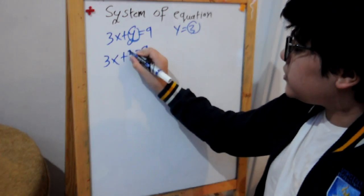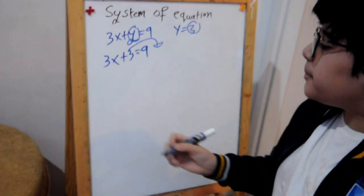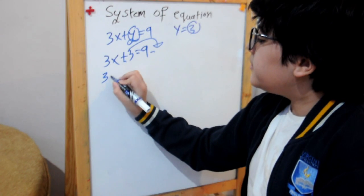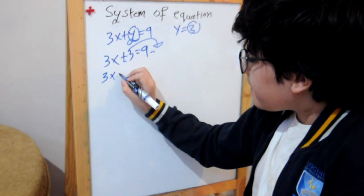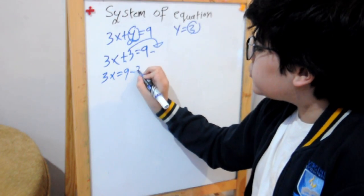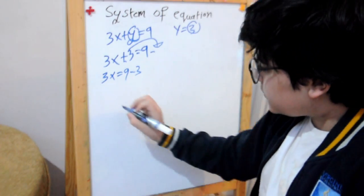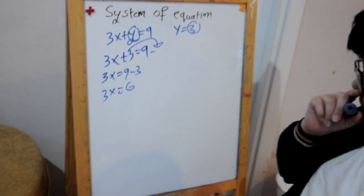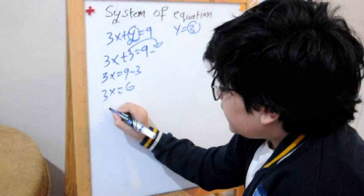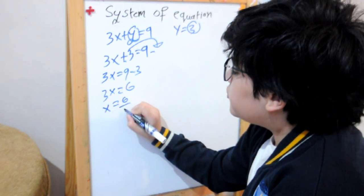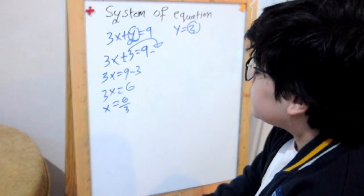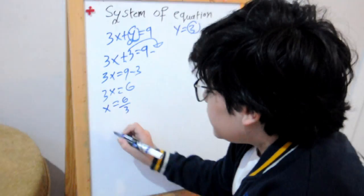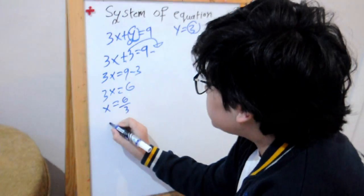Then this will go to the other side by minus. This will change to minus. So it will be 3x equals 9 minus 3. Then 3x equals 6.